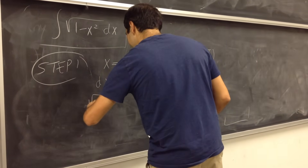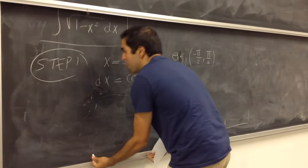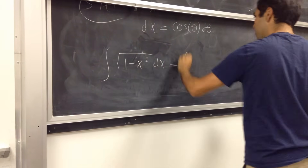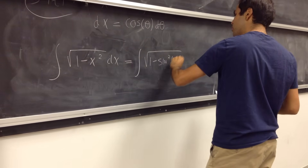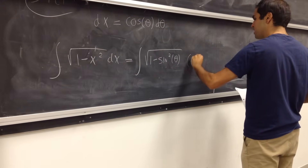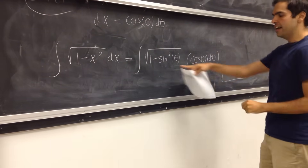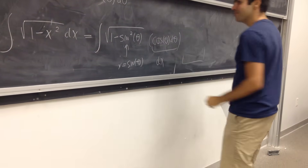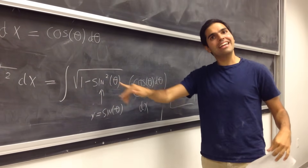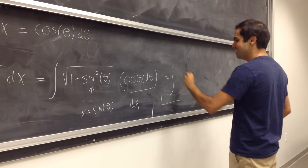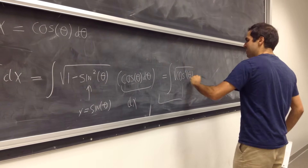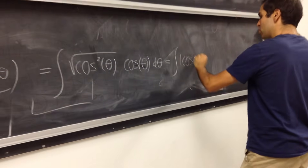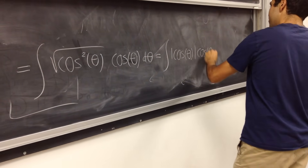Now, square root of 1 minus x squared — let's do it directly. Our integral of square root of 1 minus x squared dx becomes the integral of square root of 1 minus sine squared of theta, times cosine of theta d theta, where we used x equals sine of theta. Notice the awesome thing: 1 minus sine squared becomes cosine squared — this is precisely where the trick comes in. So we get the integral of the absolute value of cosine of theta, times cosine of theta d theta.